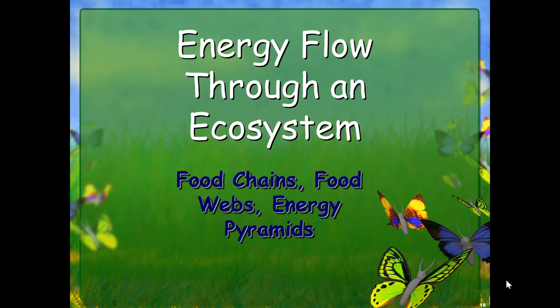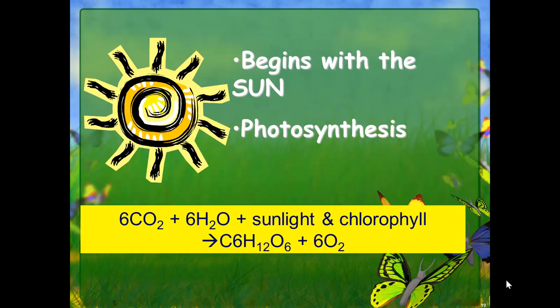Now we're talking about energy flow through an ecosystem — how does energy flow? We're going to talk about food chains, food webs, and energy pyramids. Everything begins with the sun, and we'll talk about photosynthesis, which is how plants use sunlight to make their own food. Here is the formula for photosynthesis.